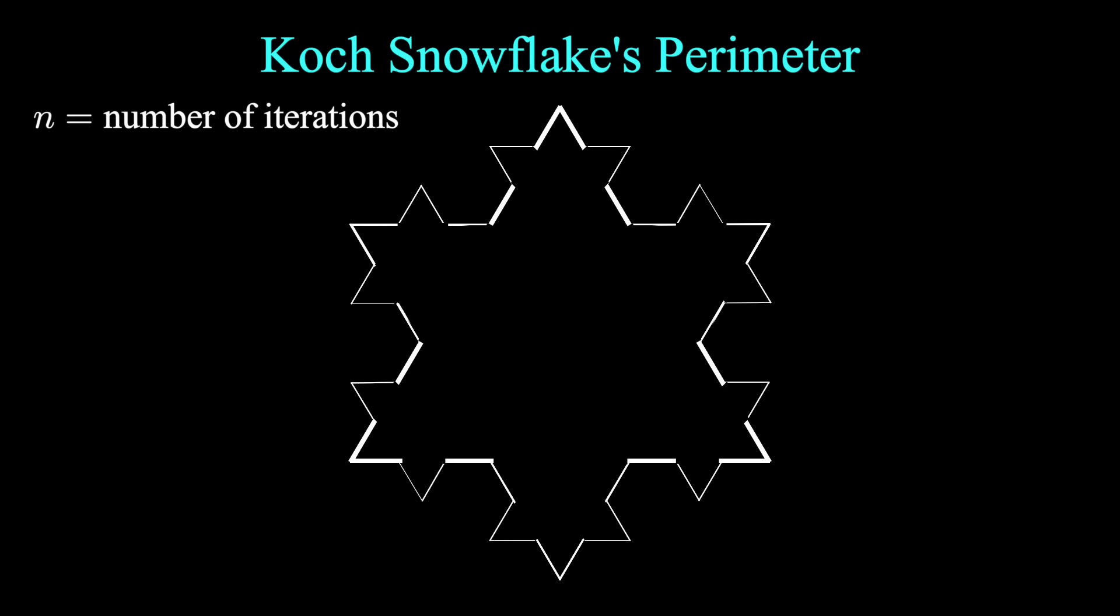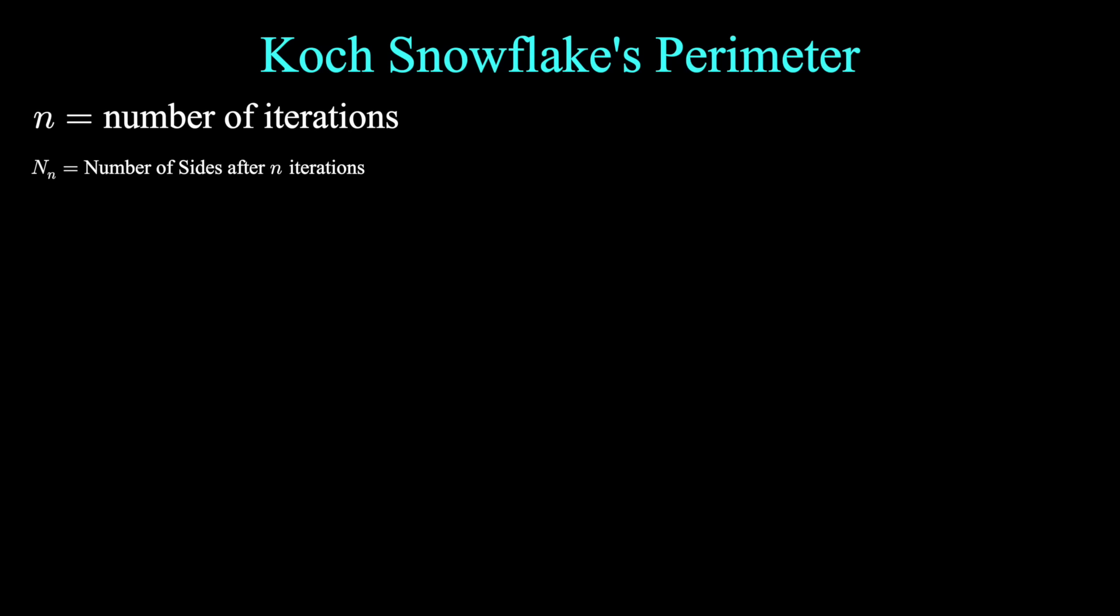We'll have to know how many sides are present at each iteration in order to find the perimeter. Let's let capital N sub n denote the number of sides at iteration n. The way that this pattern works is that each side is then replaced with four sides. So we could say that the number of sides of the nth iteration is the same as the number of sides of the previous iteration times four.